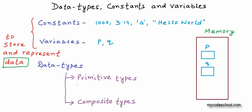In our initial lessons, we will mostly be working with primitive types. The most common primitive data types are: int for integer, char for character, float for real number, and there is another one for real numbers called double. Int, char, float, double — all of these are keywords. Keywords are reserved words that are always used in a program for a specific purpose with a specific meaning, and these keywords will always be used to mark the data type of something. There are some other primitive types in C; we will talk about them later.